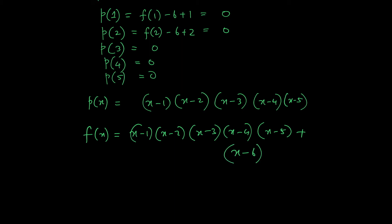So f(x) equals (x-1)(x-2)(x-3)(x-4)(x-5) plus (6-x). This gives us the least degree monic polynomial satisfying all the given conditions. We choose P(x) in this way as it is the most efficient and satisfies the least degree requirement.